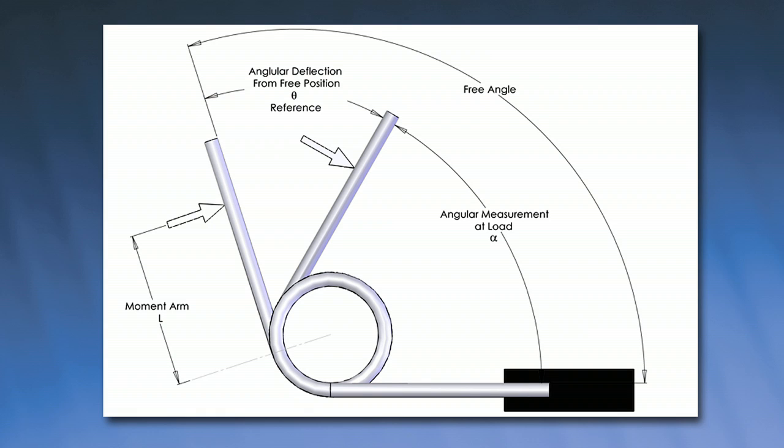That's why, just like in compression springs and extension springs where you specify a force at a certain length, you have to specify the torque on a torsion spring at a specified assembled angle — not a free position or a deflection.